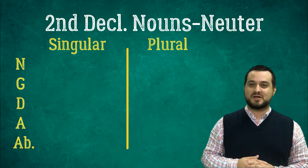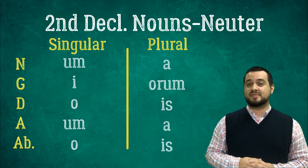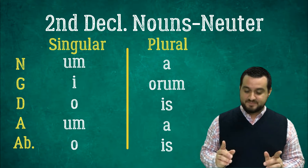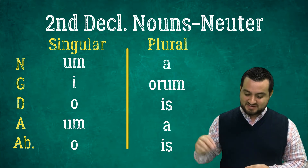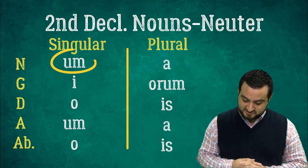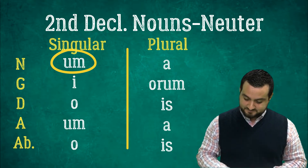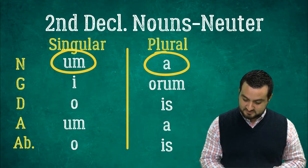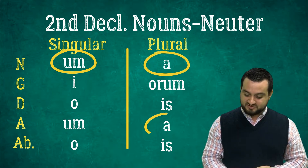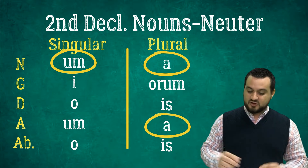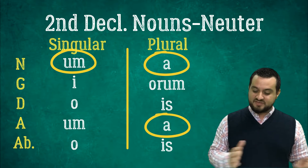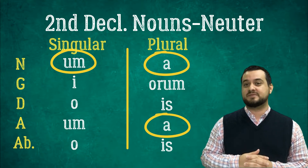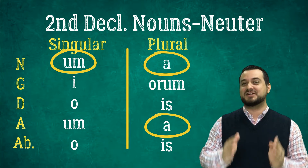I hope you guys did well at that. Remember, when we're telling apart the second declension neuter and the second declension masculine, there are a few differences. They're basically the same, except in the second declension neuter the nominative singular position is different, the nominative plural position is different, and the accusative plural position is different. Those are the only three positions where the endings change; everything else is identical or very similar to the second declension masculine chart.